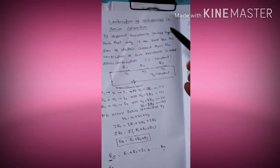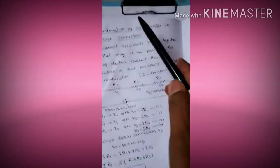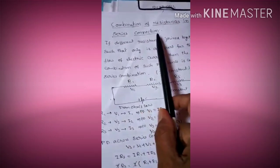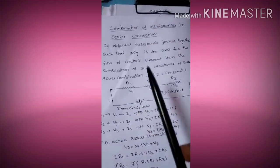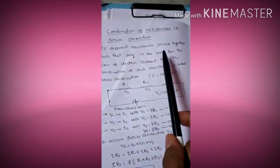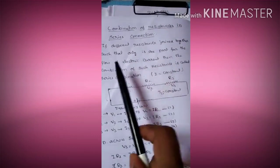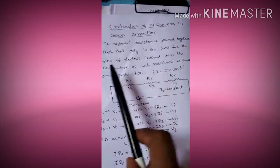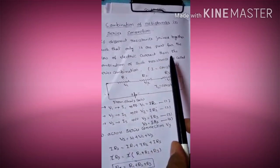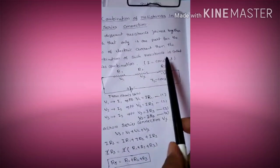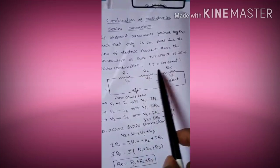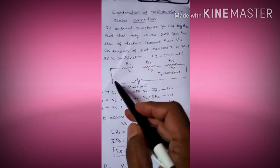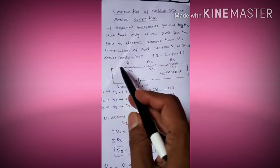Good morning students. Today we are discussing the combination of resistance in series connection. What is a series connection? If different resistances are joined together such that only one path exists for the flow of electric current, and the current is moving only in one direction, then the combination of such resistances is called a series connection.